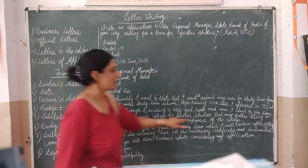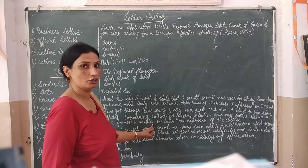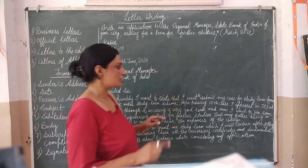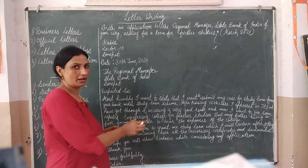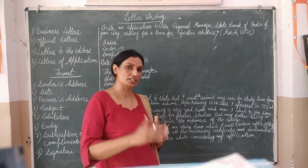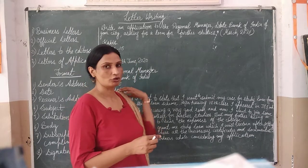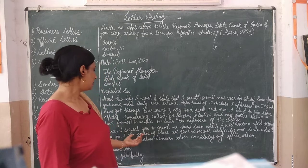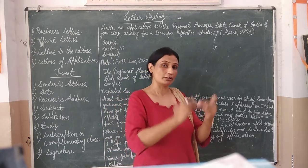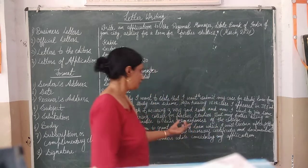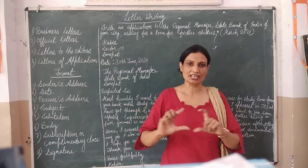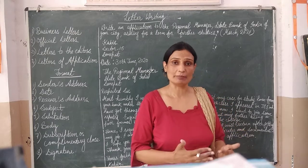In the next paragraph, state that you are requesting the loan which you will return after getting your job. Mention that you are attaching all the necessary certificates and documents required. You hope that the authority will consider your application favorably. End with an appealing closing line asking them to consider your humble request.